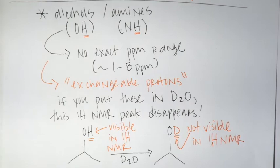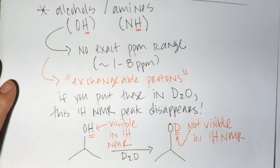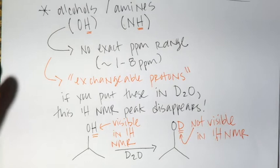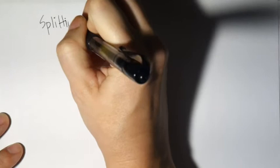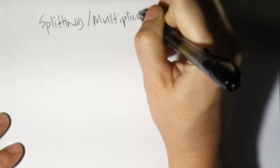That summarizes the environment for H NMR. It's very similar to carbon NMR in terms of chemical shift and PPM ranges, just with different numbers and a different scale. There are a couple things specific to proton NMR because you have protons instead of carbons. Next I'm going to talk about the splitting pattern, also known as the multiplicity of the peaks.